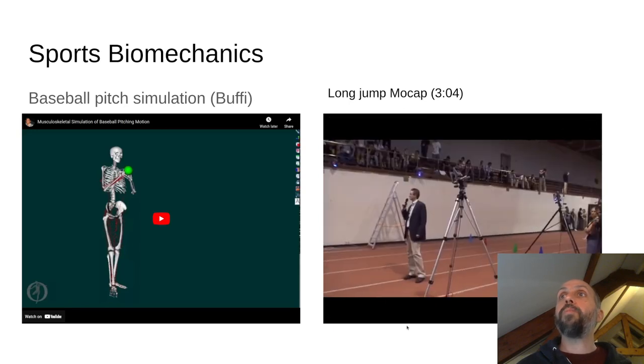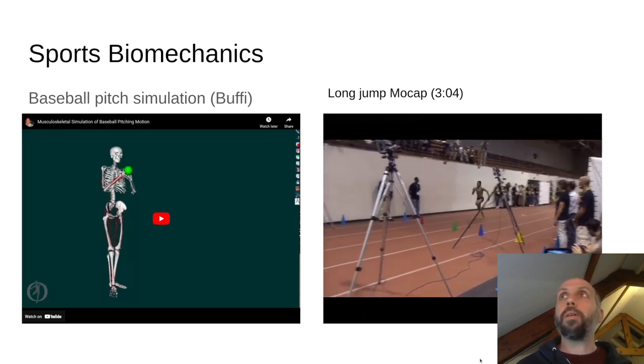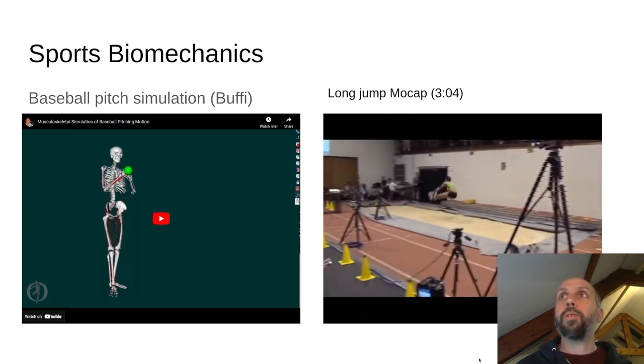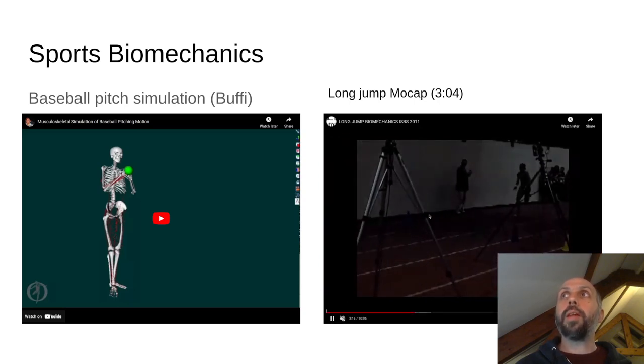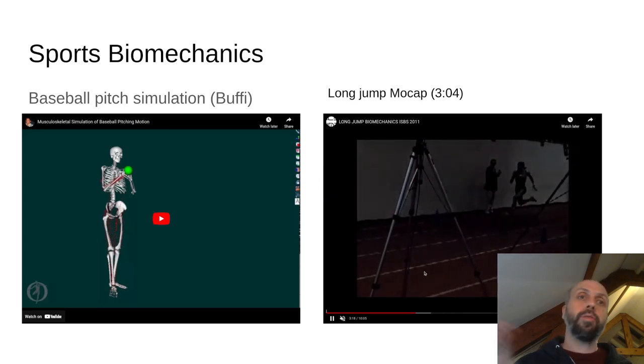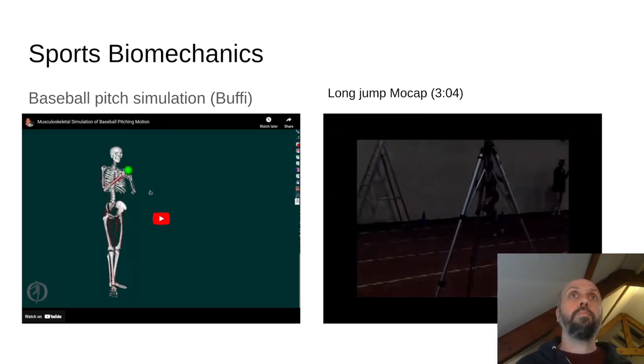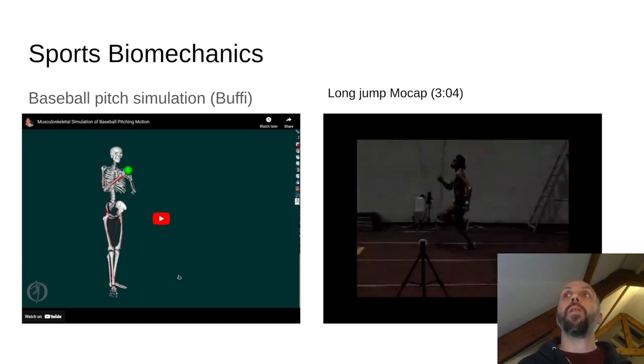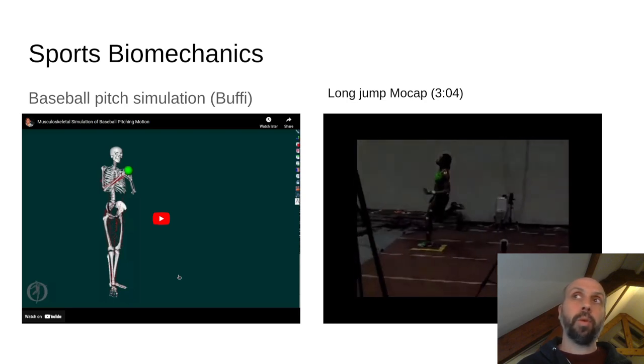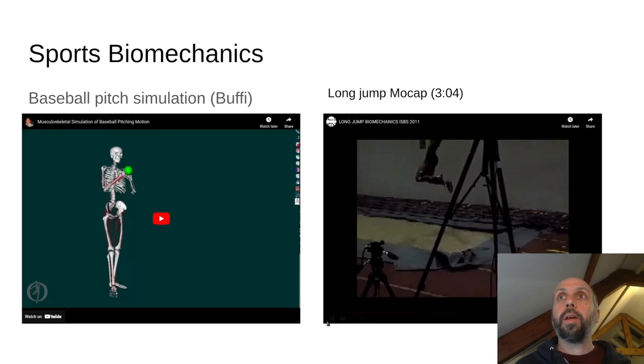So all of these cameras are tracking the position of different markers on this woman's body as she does the long jump there. Using that data of the positional motion and then mapping it to the skeletal bodies can help us understand what kind of forces are used to launch the body, how can we optimize that and improve performance.